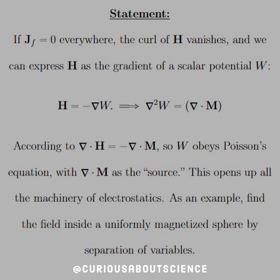According to the divergence of H equal to negative divergence of M, so W obeys Poisson's equation, while the divergence of M is treated as the source. This opens up all the machinery that we saw in electrostatics.